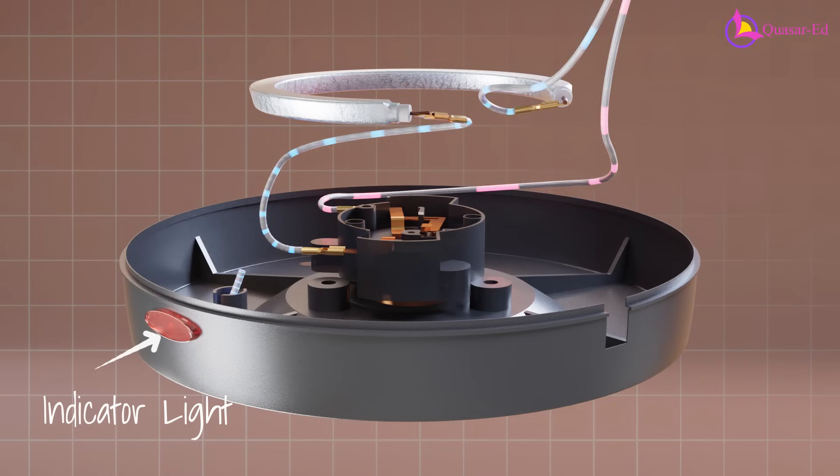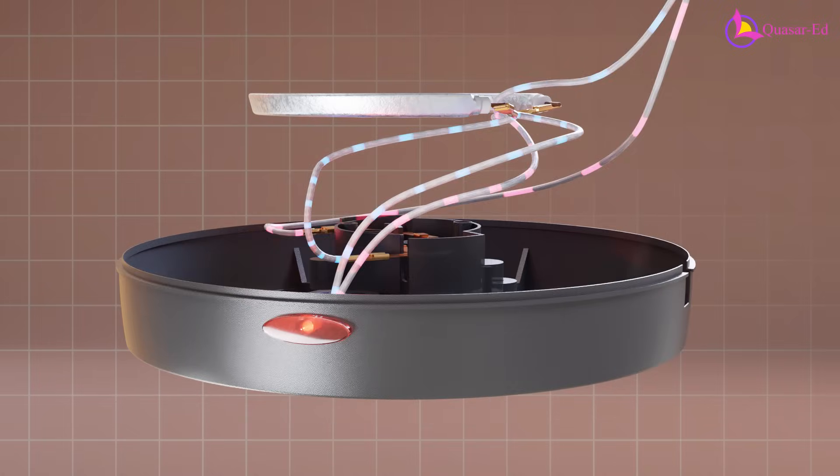An indicator light at the bottom of the kettle joins the circuit after the switch, so it only lights up when the switch is on.